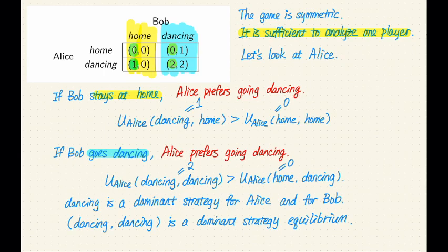So this means that dancing is a dominant strategy for Alice because it satisfies the definition. Let's recall the definition.